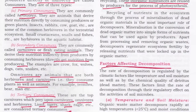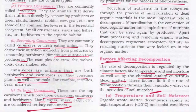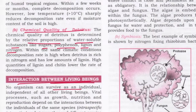Factors affecting decomposition — the rate of decomposition is regulated by climatic factors like temperature and soil moisture, as well as by the chemical quality of detritus (dead matter). Temperature and soil microbes are key: organic waste matter decomposes rapidly at less than 25 degrees Celsius under moist conditions in humid tropical regions. The chemical quality of detritus is determined by its relative proportions of water-soluble substances like sugars, polyphenols, lignin, and nitrogen.